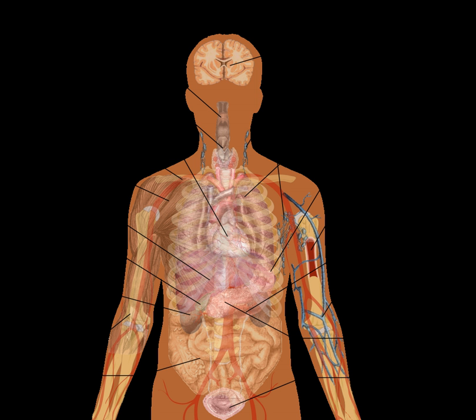Integumentary system: skin, hair and nails of mammals. Also scales of fish, reptiles, and birds, and feathers of birds.